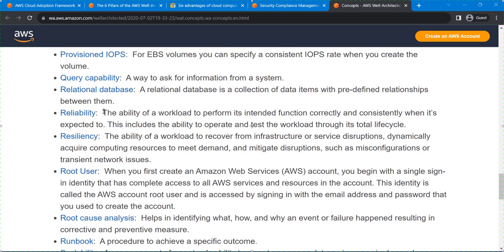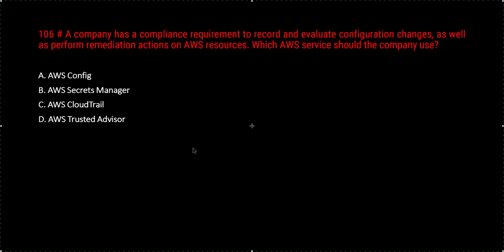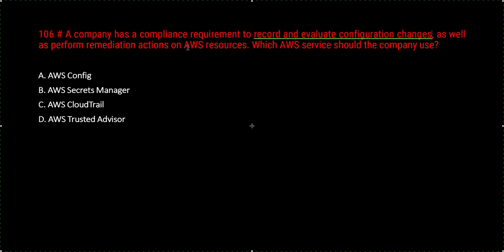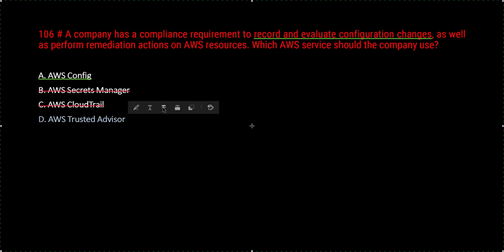Question 106: A company has a compliance requirement to record and evaluate configuration changes and perform remediation actions on AWS resources. You don't need to read the rest — the answer is AWS Config. Secrets Manager stores passwords and API secrets. CloudTrail logs all API calls. Trusted Advisor gives best-practice recommendations.